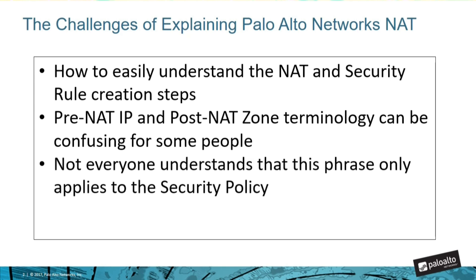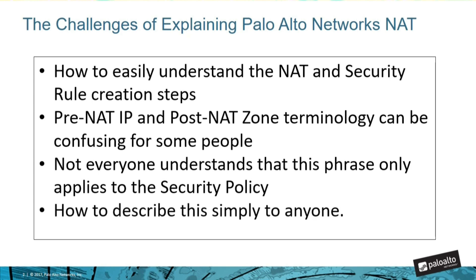Many people think it applies to the NAT policy or to the security policy or both, and this confusion tends to leave our end users thinking that our NAT process is overly confusing. I'd like to demonstrate a simple method of describing NAT that works in all scenarios, and also show how bi-directional NAT rules can cause problems in specific situations.